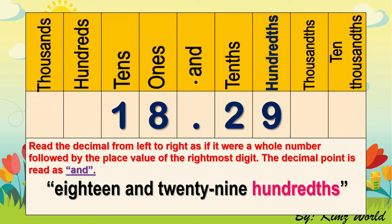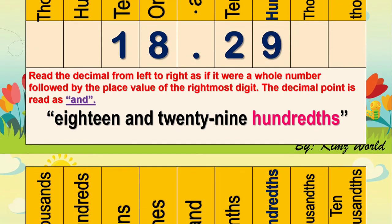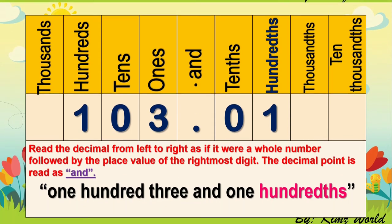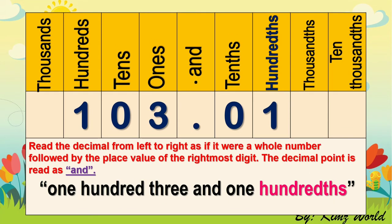Next number, we have 103.01. Let us read it properly. Read it from left to right: 103. Read the point as 'and,' and then 1, and then say the place value of the last digit to the right. So we read it as 103 and 1 hundredth.